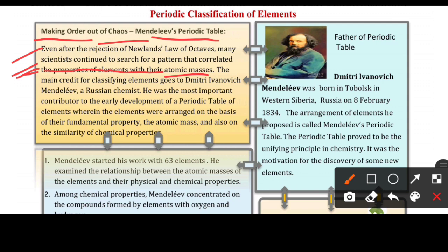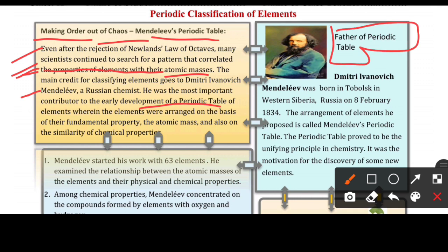So it comes to our Mendeleev — Dmitri Ivanovich Mendeleev — who was a Russian chemist. He was the most important contributor to the early development of the periodic table, which is why he is called the Father of the Periodic Table. The elements were arranged on the basis of their fundamental properties, atomic masses, and similarity of chemical properties.